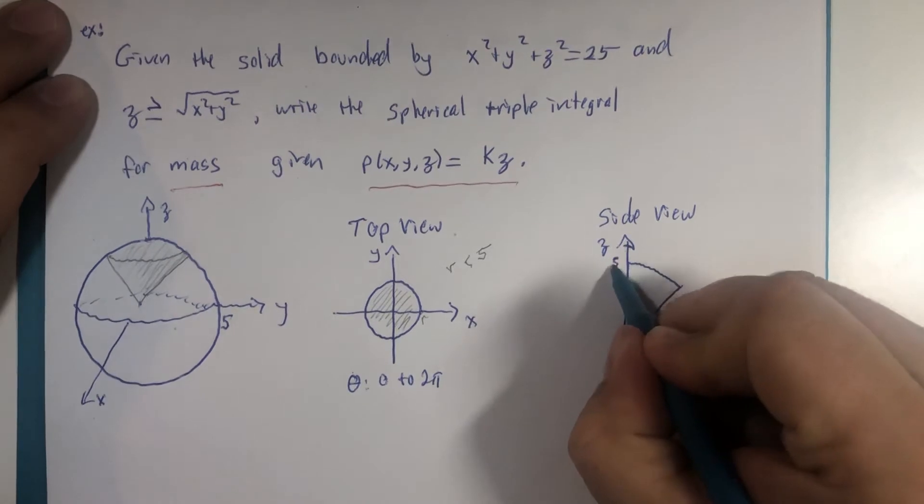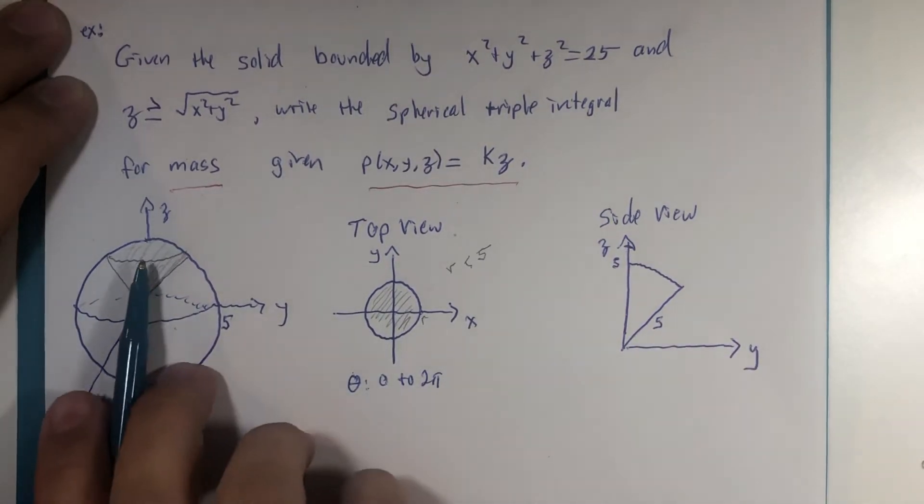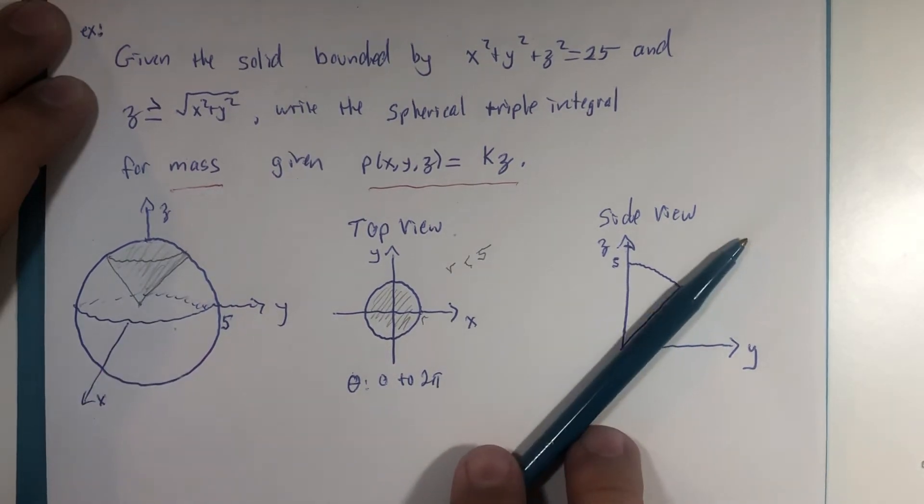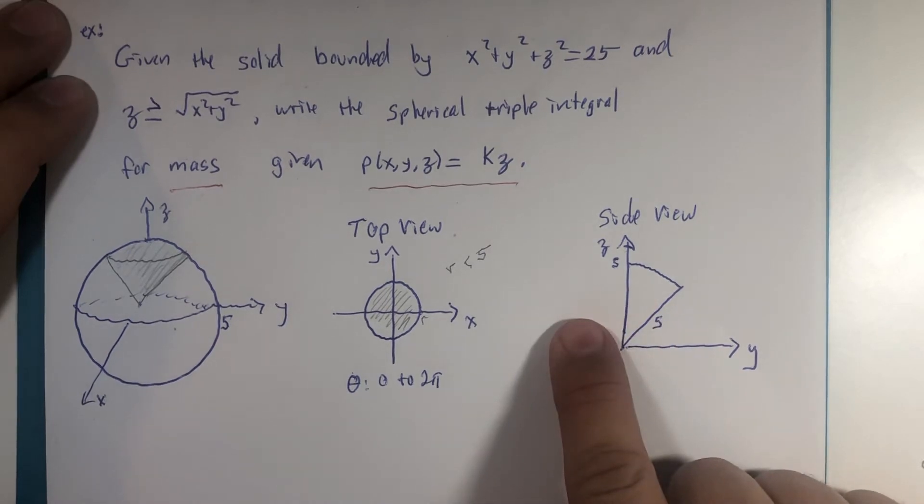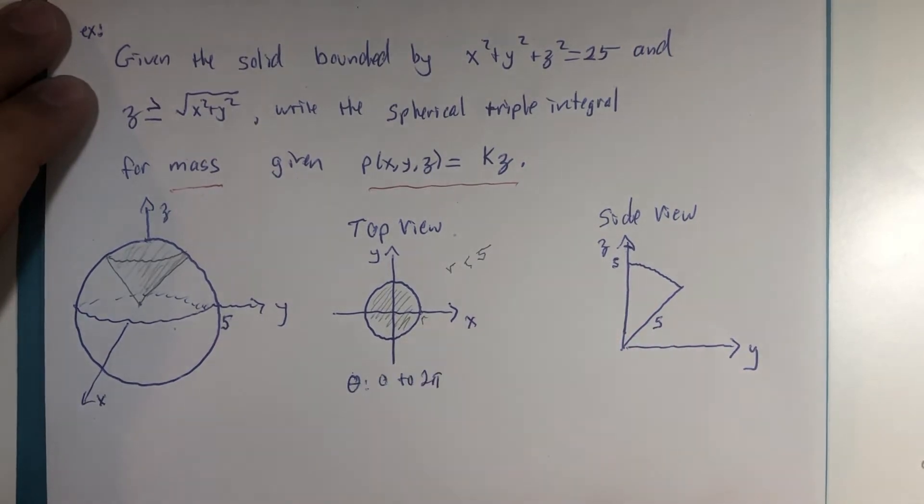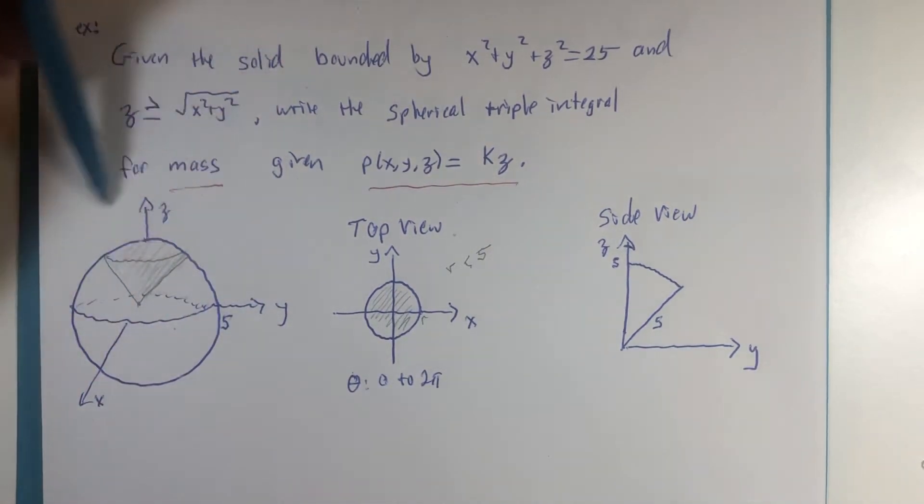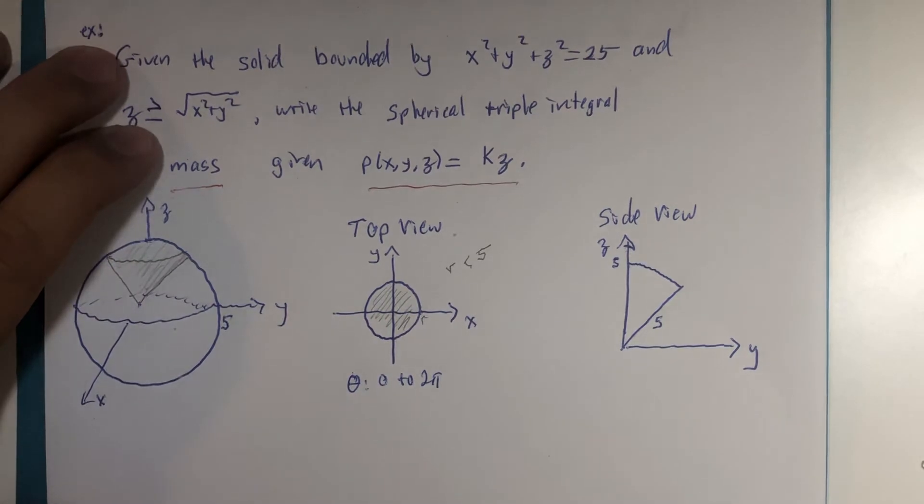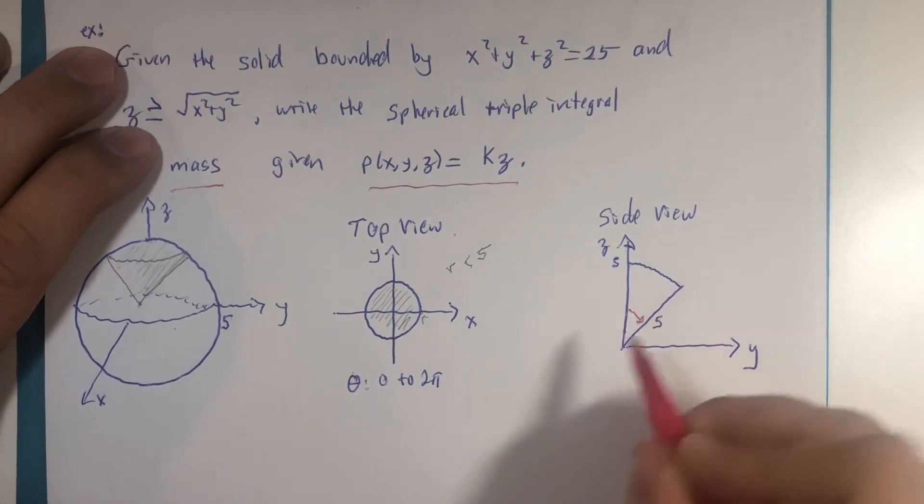And this side view should look something like this. That's 5 units, and this is 5 units, because we're looking at a part of the sphere that happens to be above this cone. And the reason I'm not drawing the other side is theta already tells me that I'm going to rotate this all the way around the z-axis.